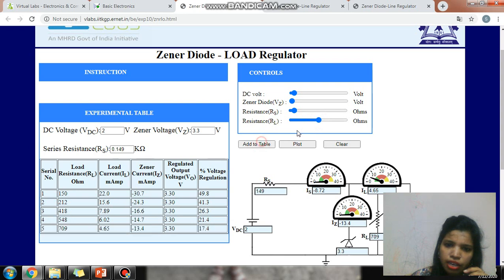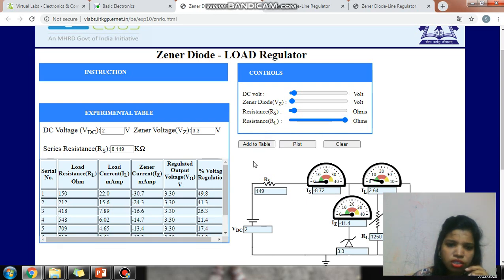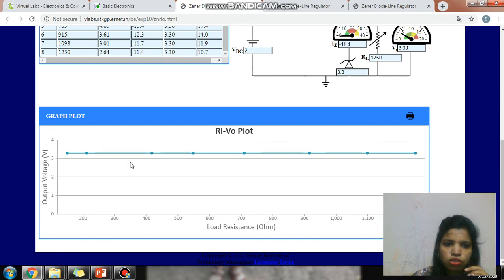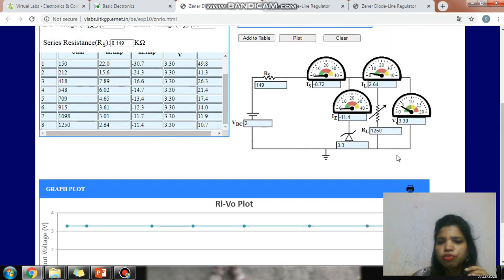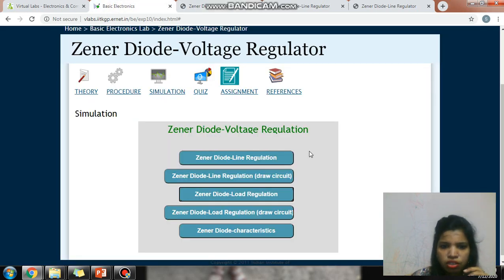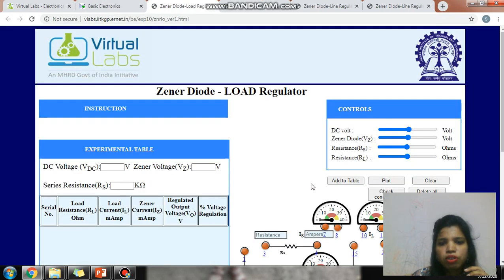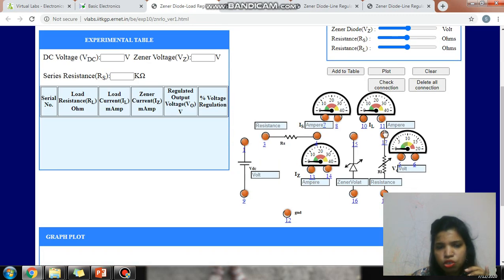Now vary the load resistance, add to the table. In this way you can take eight to ten values and note down the effects in the regulation table. Check the plot. Now see, whatever the variation in load resistance, the output voltage is fixed, and that is the purpose of the load regulator. So in this way we have done line regulation, load regulation, and the same is the load regulation connection diagram you can do by yourself.